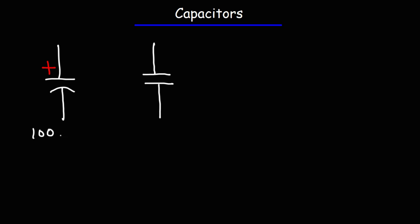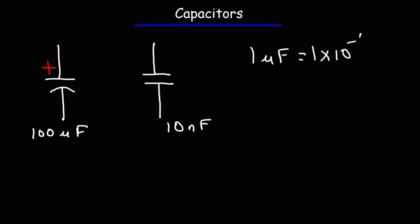A typical electrolytic capacitor can have a capacitance of 100 microfarads, whereas a non-polarized capacitor may have a capacitance of 10 nanofarads. Keep in mind: 1 microfarad is equal to 1 times 10 to the minus 6 farads, whereas a nanofarad is equal to 1 times 10 to the minus 9 farads.